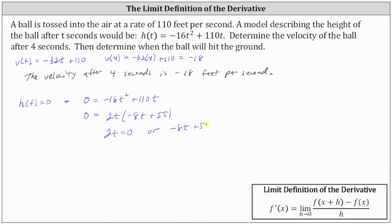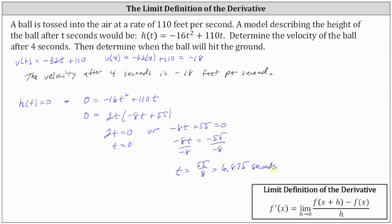The product on the right is equal to zero when 2t is equal to zero, or when negative 8t plus 55 is equal to zero. 2t equals zero when t equals zero — this is not the time we want, as it tells us the ball starts on the ground at time zero. Solving the second equation, we subtract 55 on both sides and divide by negative eight, giving us t equals 55 eighths, which is equal to 6.875 seconds. So the ball will hit the ground after 6.875 seconds.